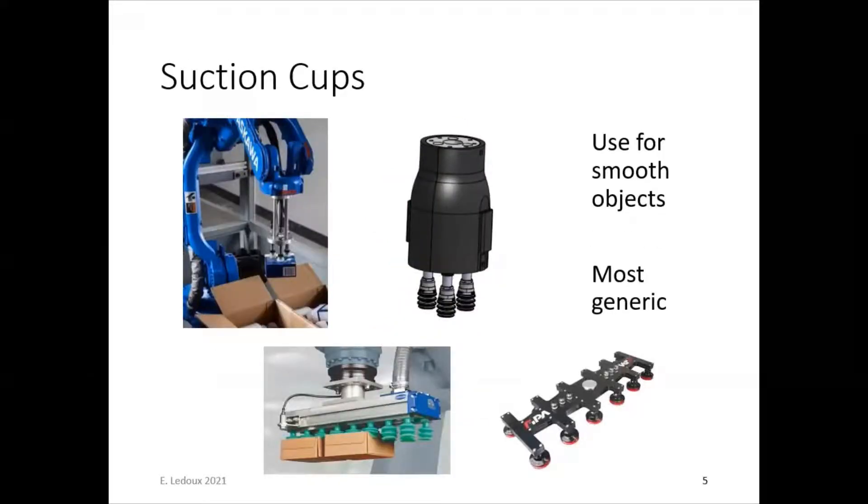Suction cups are the most generic type of end-of-arm tool. So these are used for smooth objects. Almost any type of smooth object really can be picked up: paper, plastic, glass, wood, metal, pretty much anything.